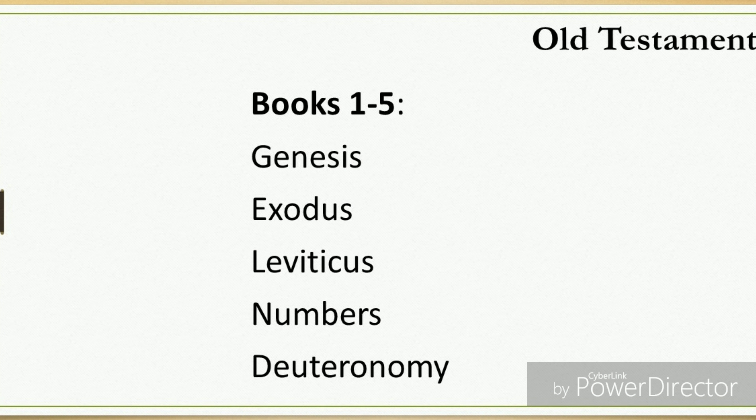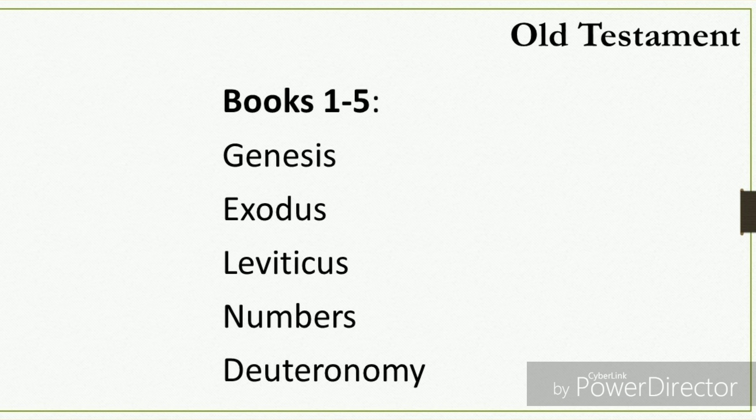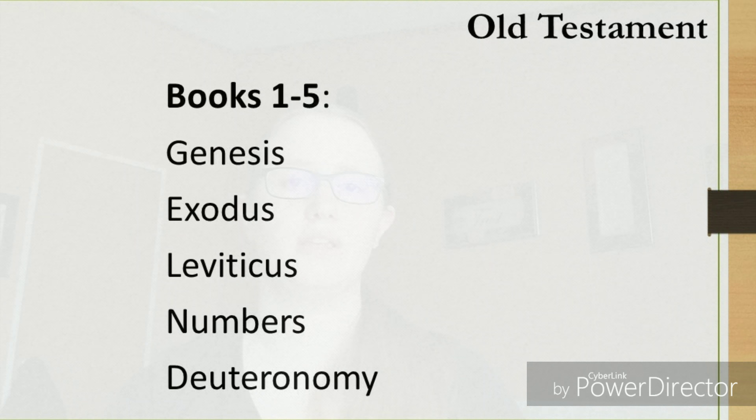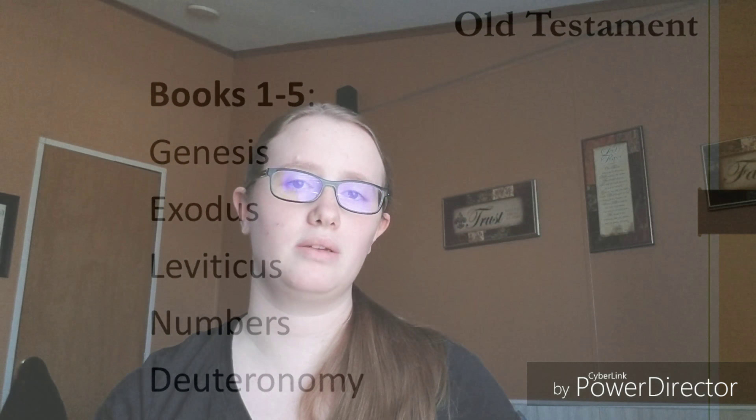The first five books, books 1 through 5, are called the Law, or in Hebrew, Torah. These five books include history and the Law of the Nation of Israel, which was given by God to Moses.